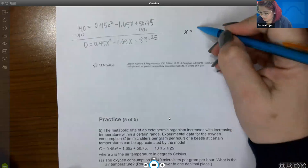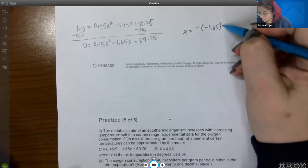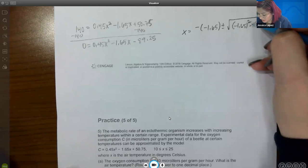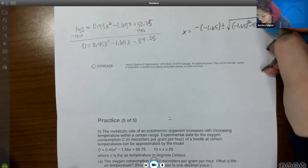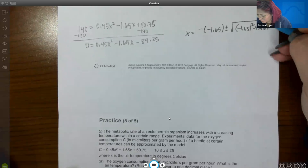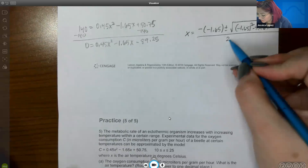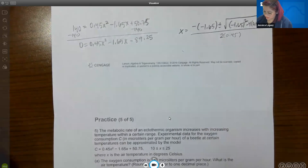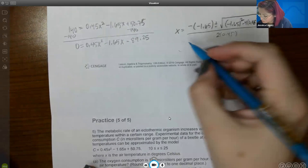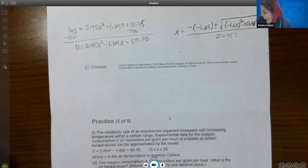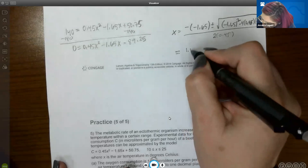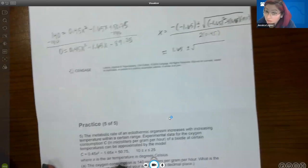So negative of B, which is negative 1.65 plus or minus negative 1.65 squared minus 4 times A times C. The whole thing over 2 times A. So I'm going to do this in each piece. Okay, we're going to do the negative of negative 1.65, which is just positive 1.65. And I've run out of pencil there. So let me grab my pen. So we get positive 1.65 plus or minus,